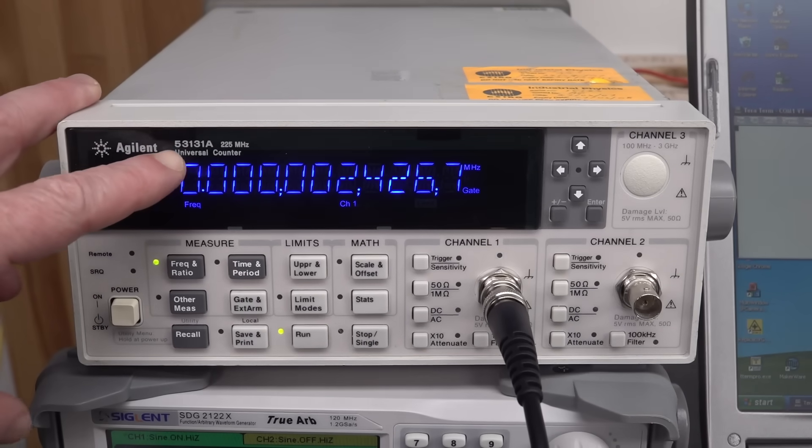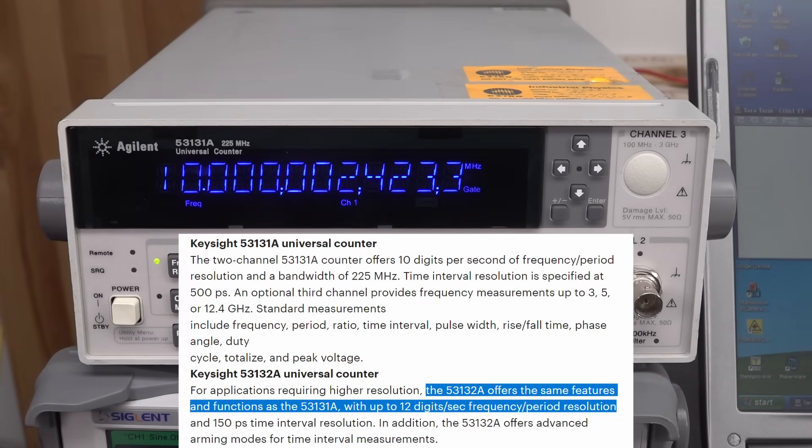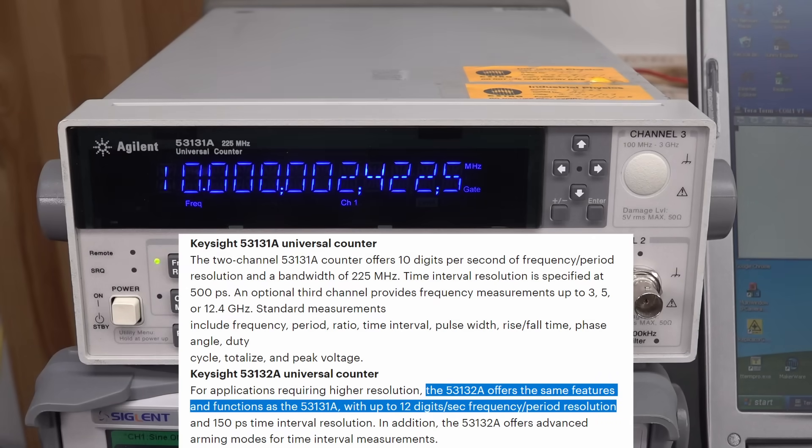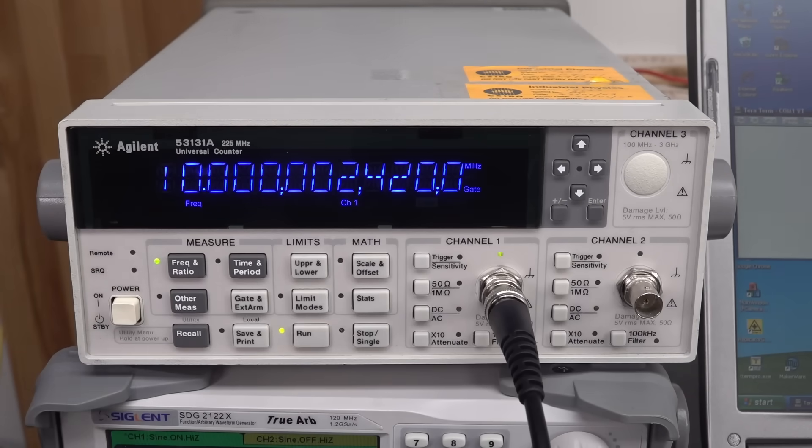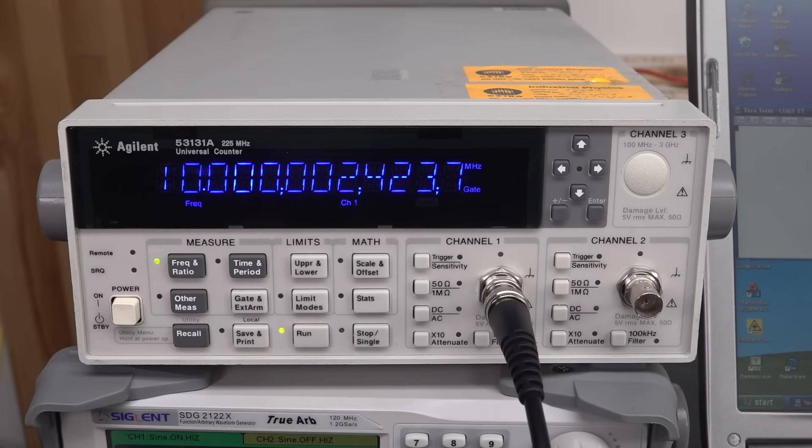But here's the difference with the other model, the 53132A, which I don't have here, so I can't demonstrate it, but it is basically, I think it's the only major difference between them, but the major difference between the 132A and the 131A that I've got here is that the 132A is 100 times faster at updating. So with the 12 digits here, instead of taking 10 seconds, it would only take 0.1 seconds. So this one's slower, but it's still just as capable. So if you're hunting for one of these used on eBay, try and get the 132A.